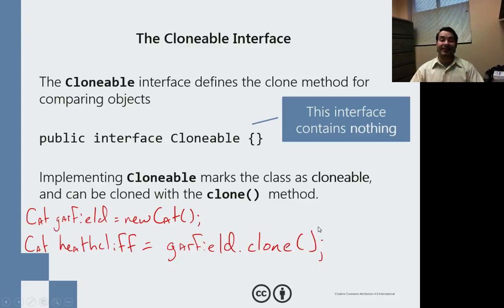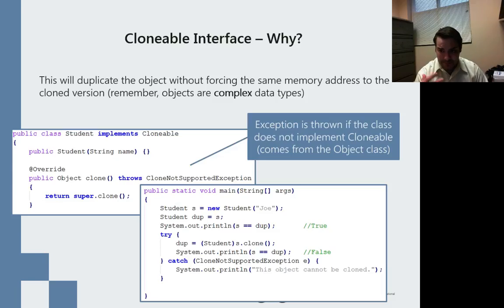What that does is it takes everything inside of the cat class that is unique to Garfield and duplicates that. So if there's a name variable, that gets duplicated. If there's an age variable, that gets duplicated. If there's a tricks ArrayList that I've made, that gets copied over as well.